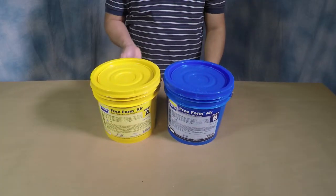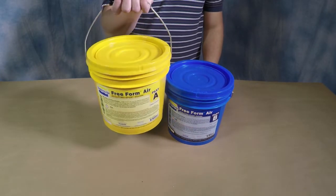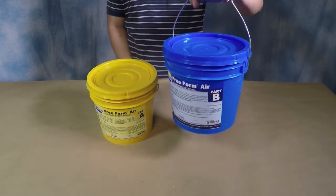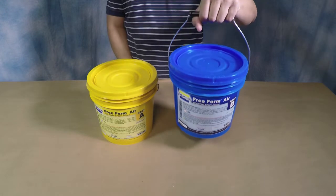To make our sculpture today, we'll be working with a gallon unit of Freeform Air. This is part A, and this is part B. Freeform Air is a lightweight epoxy putty system.